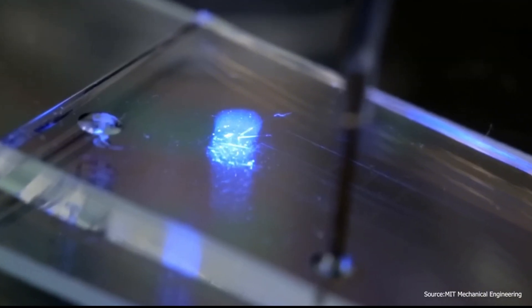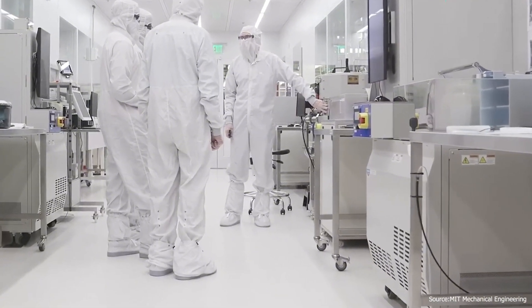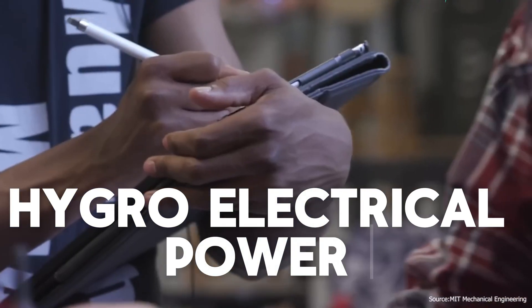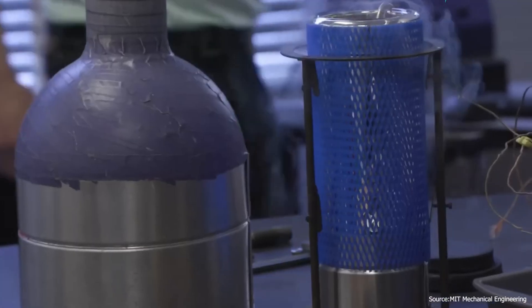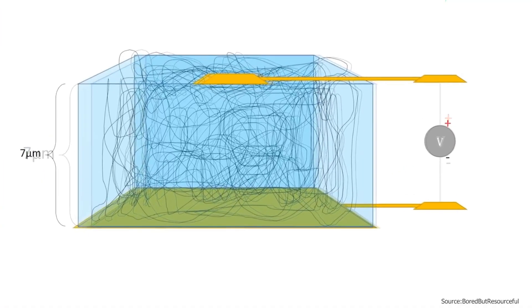A team at the University of Massachusetts Amherst has found that we may be able to convert humidity into electricity. Known as hydroelectric power, their breakthrough was initially just a curious finding but it has potential to transform how we get renewable energy.